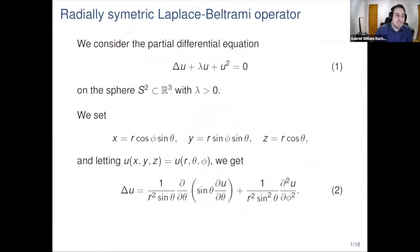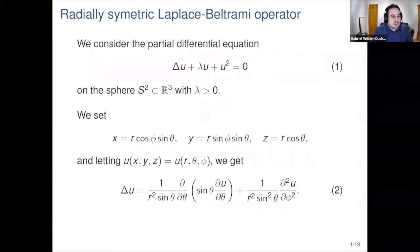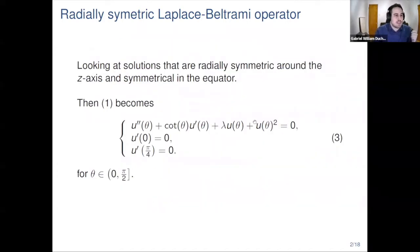We consider the partial differential equation on the two-sphere with positive parameter lambda. Since we're on the sphere, we will try to make that equation simpler by first doing a change of variable. Using the classical spherical change of variable, the Laplace-Beltrami operator over u becomes the operator shown in equation two. We then look specifically at solutions that are radially symmetric around the z-axis and symmetric in the equator, which allows us to rewrite the equation as a second-order ODE with a Neumann boundary condition.